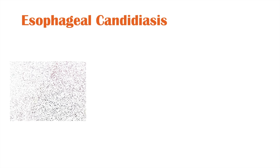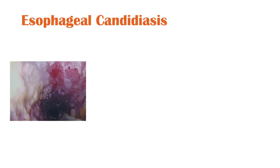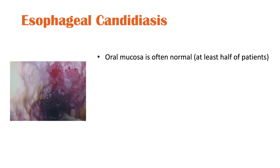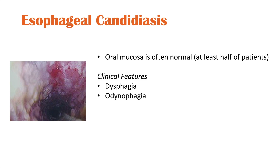Esophageal candidiasis is the next type, working down the gastrointestinal system. Notably, at least half of patients with esophageal candidiasis have a normal oral mucosa, though oropharyngeal candidiasis may also be present. Clinical features include dysphagia (difficulty swallowing), odynophagia (painful swallowing), and epigastric pain in the center of the abdomen above the belly button. Retrosternal chest pain can also occur, which in some instances may be mistaken for a heart attack.